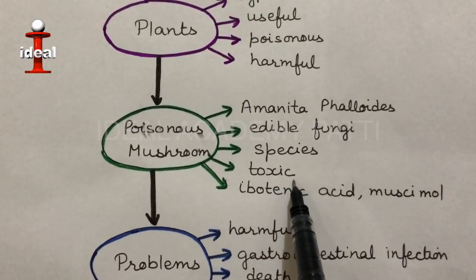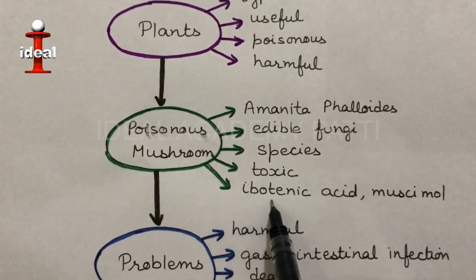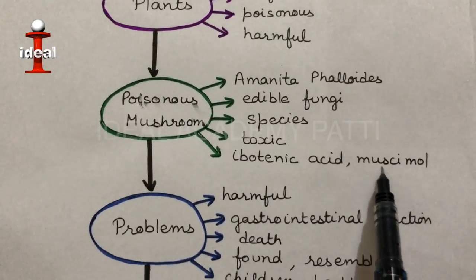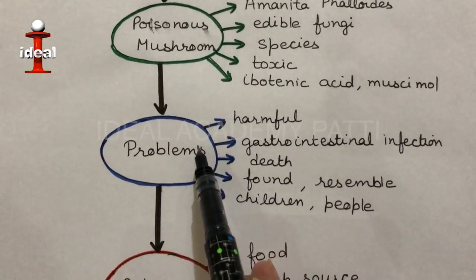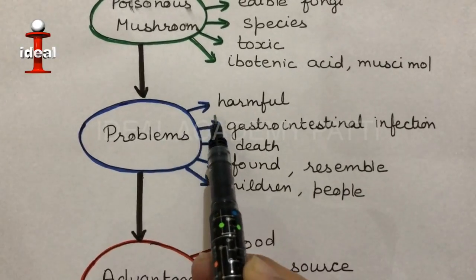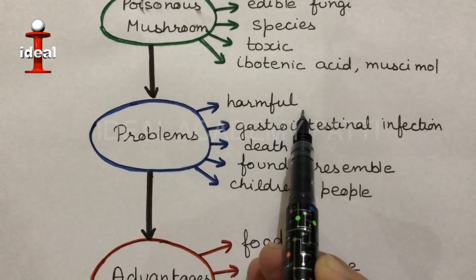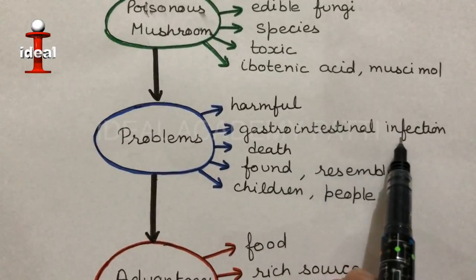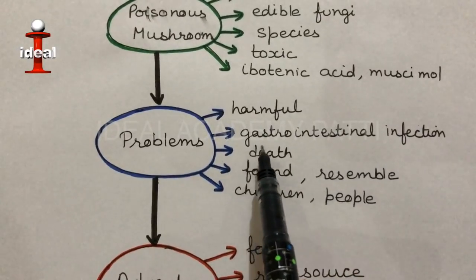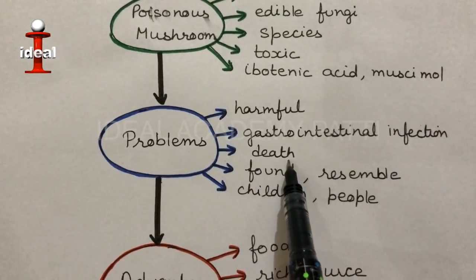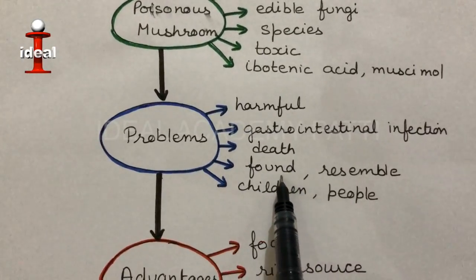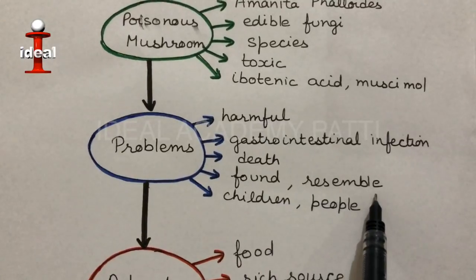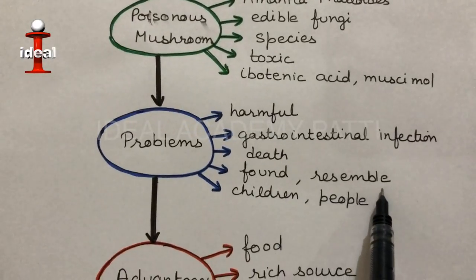Amanita phalloides is a highly toxic mushroom. It contains ibotenic acid and muscimol, which lead to mushroom poisoning. Ingesting this mushroom has harmful effects on human health — it causes severe gastrointestinal infection which is incurable and leads to death. This mushroom is found in lawns and wild areas.